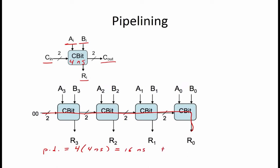The throughput of a combinational circuit is 1 over its latency, so the throughput of this circuit is 1 over 16 nanoseconds. The next question we want to consider is what two bits would we expect to see coming out of the unused Cout outputs from the low-order C-bit module if A[3:0] and B[3:0] are identical numbers.